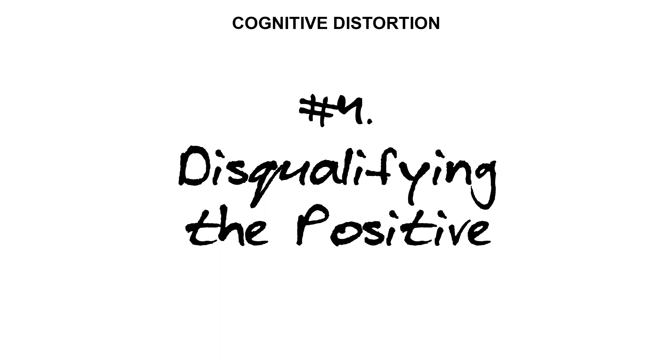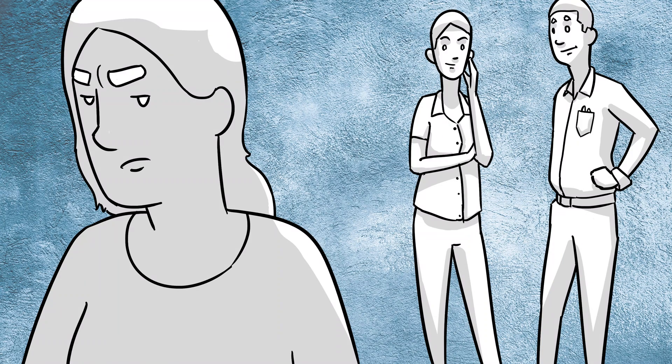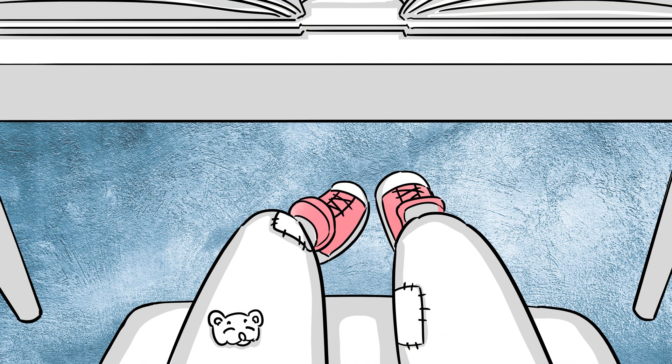Cognitive distortion number four, disqualifying the positive. Disqualifying the positive is when we take compliments and turn them around to be negative. The mind makes up a story that twists a compliment around so that it becomes negative and couldn't possibly be genuine. They're only saying how smart I am because they want me to do their work for them. Yeah, she just complimented my shoes because she hates my outfit.